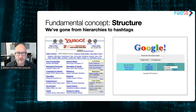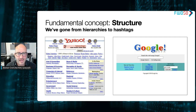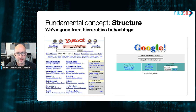Yahoo in the early days of the internet was a giant list of hierarchies — arts, humanities, news, reference — and you would navigate down to find the category you wanted. Google came along and said: just type a word in and we'll find it for you. We've gone from having to know the structure of things and fit the world into our model, to just pouring all the information in and letting algorithms search it for us.